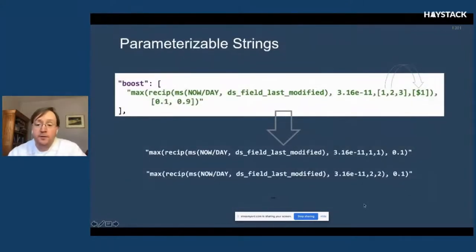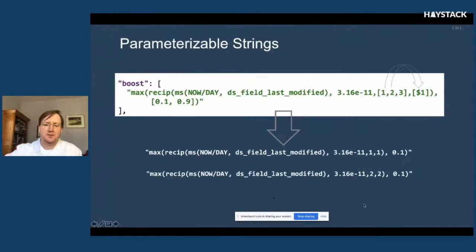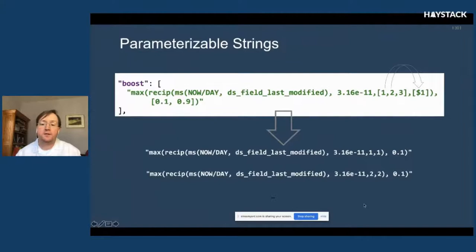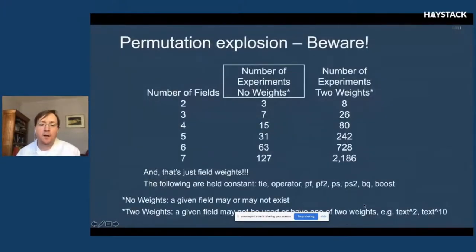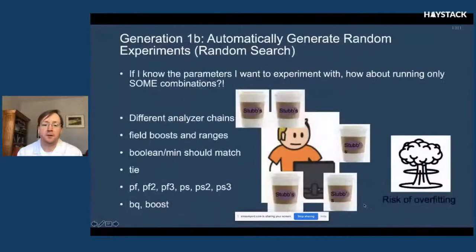I also added parameterizable strings, where you can take a recency boost and specify a range of values — say 1, 2, or 3 — and have those boost together so that the next value is exactly the same as the first. You can do some pretty complex parameterizing to specify different types of experiments. But as you can tell, if you do all the permutations you get permutation explosion — with seven fields you get up to 2,000 experiments for two weights.